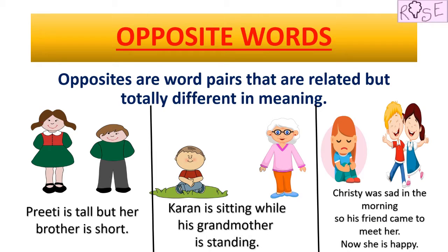Before starting the activity, let us learn what opposite words are. Opposites are word pairs that are related but totally different in meaning — some word pairs that are related to each other but are totally different in meaning. Let us understand this definition by reading all these sentences.